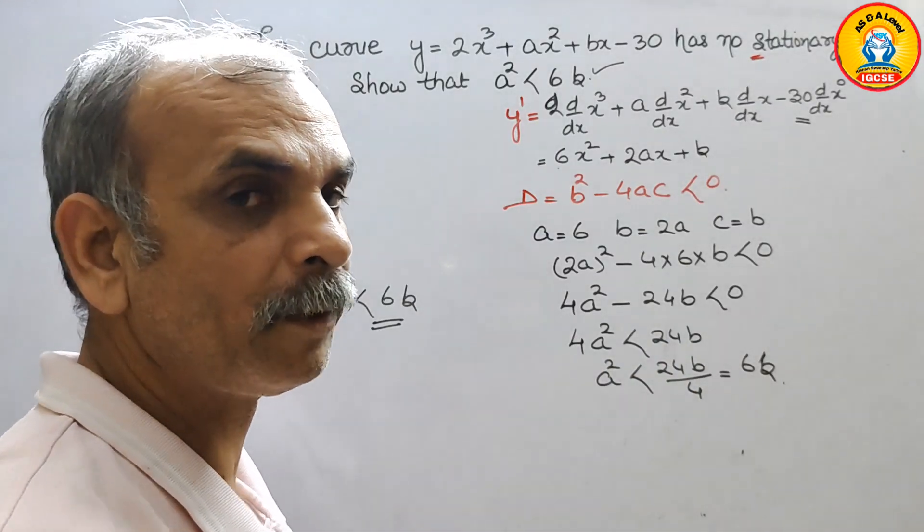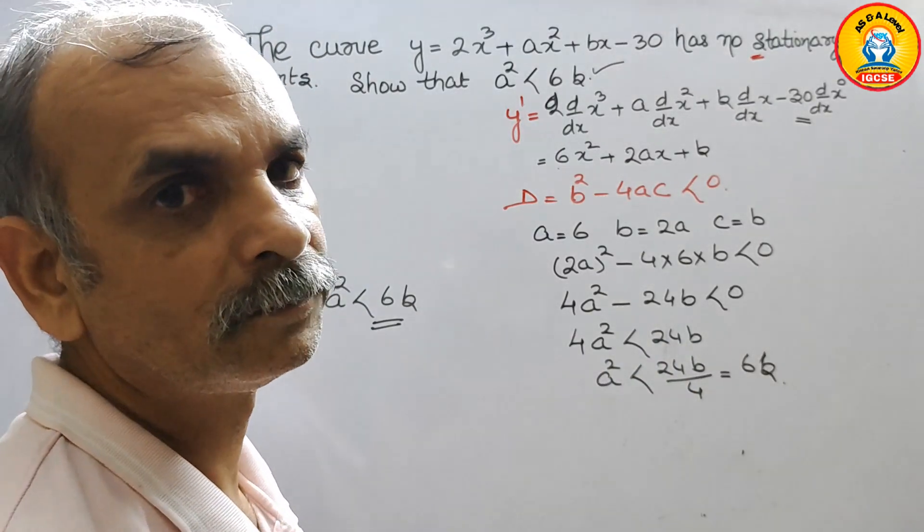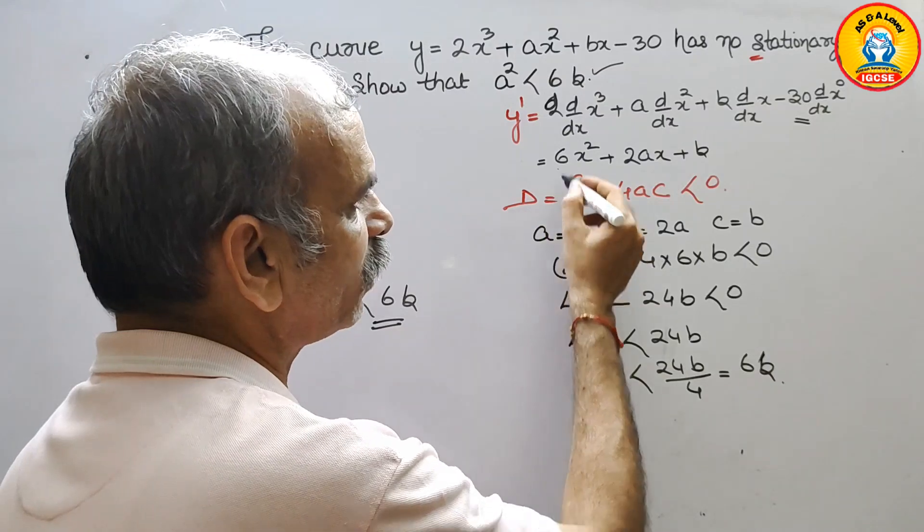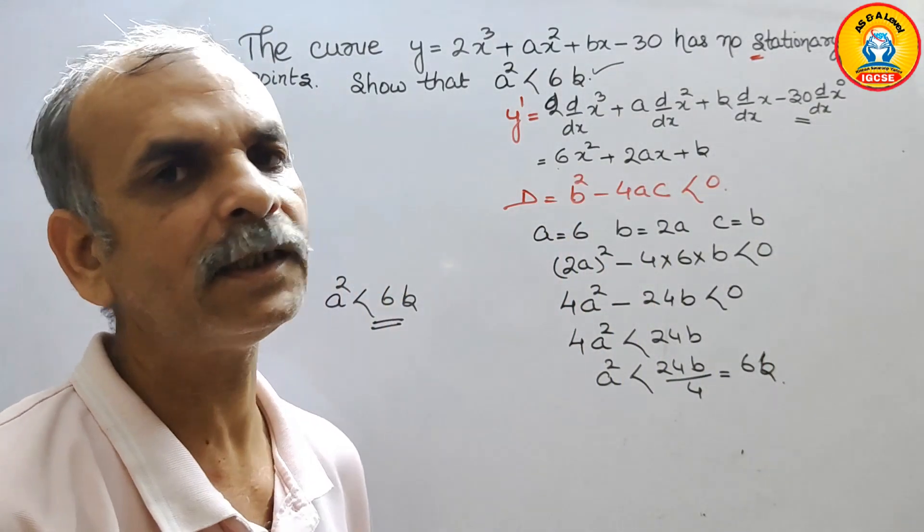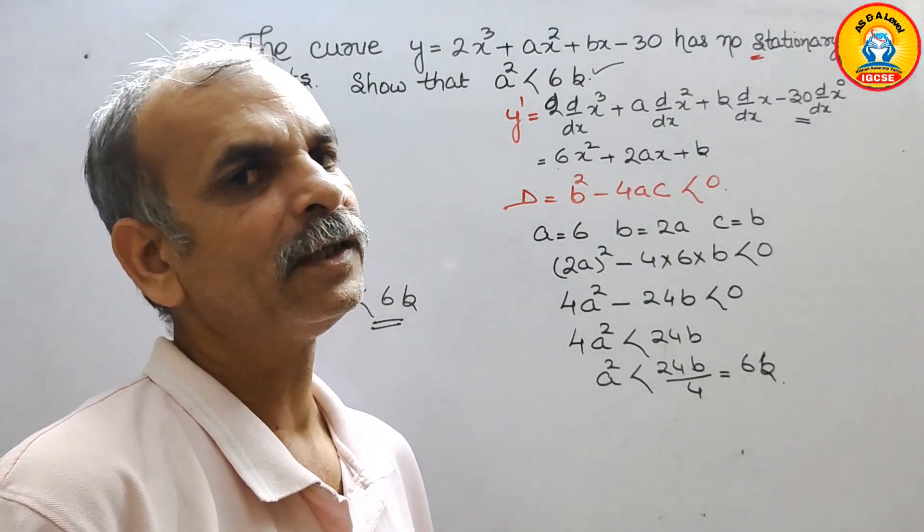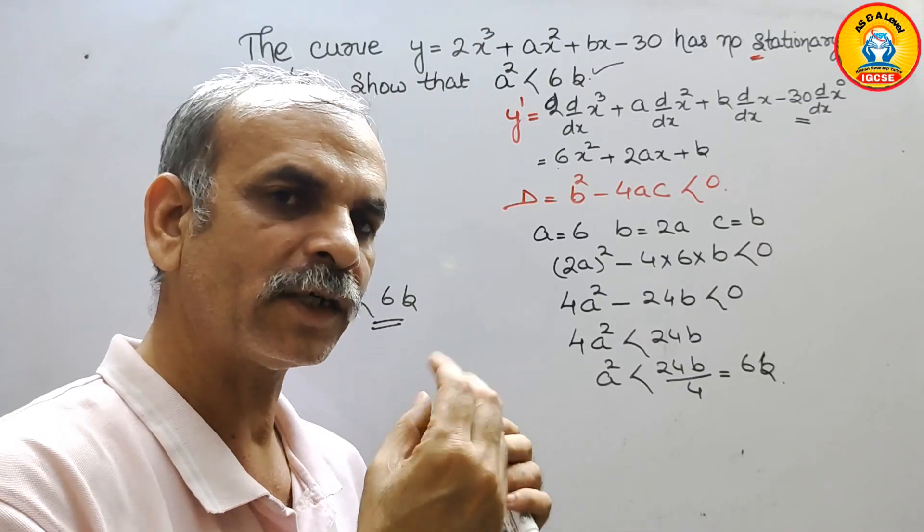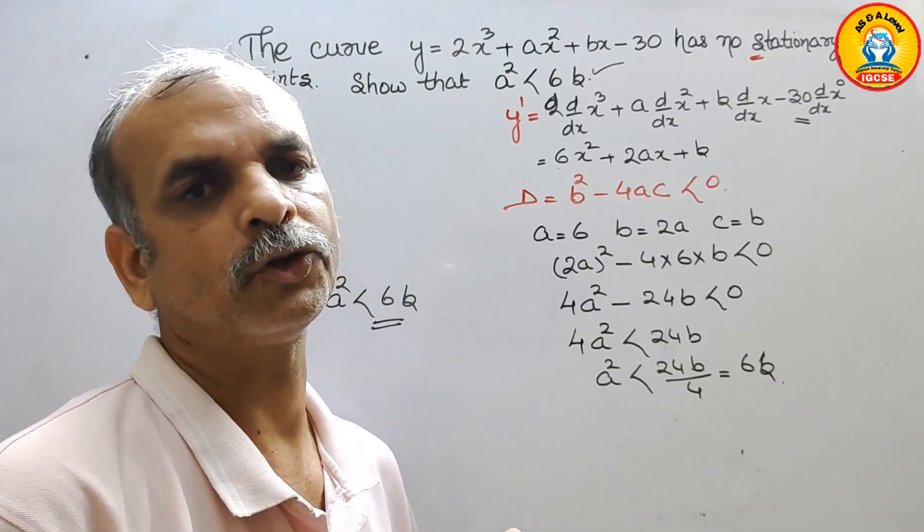So we have to remember the discriminant formula, that is d equals b² minus 4ac which is less than 0. Therefore, we will not get real roots, so it does not contain stationary roots also.